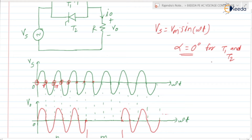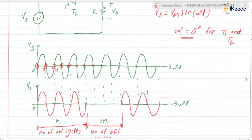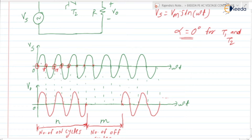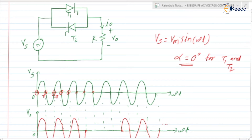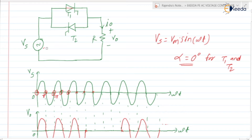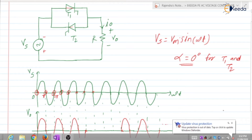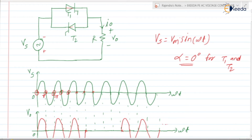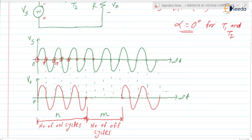The important thing is we are going to keep alpha equal to zero. So if we keep alpha equal to zero, once thyristor T1 turns on, the output voltage will be same as that of the supply voltage. When T1 conducts, V0 will be same as the supply voltage. After that, from pi to 2 pi, supply voltage is negative — meaning minus here and plus here — so thyristor T2 will be in the on state and T1 will be in the off state. In the output, we will be getting the full positive cycle and full negative cycle.